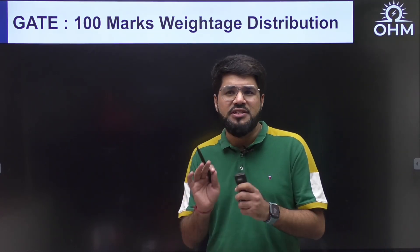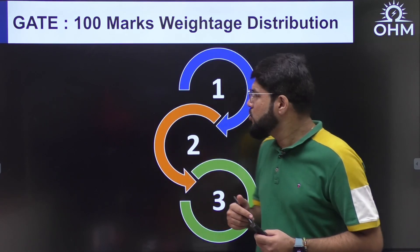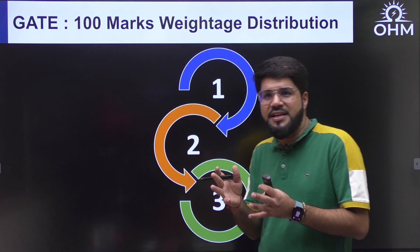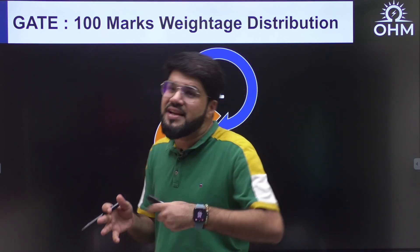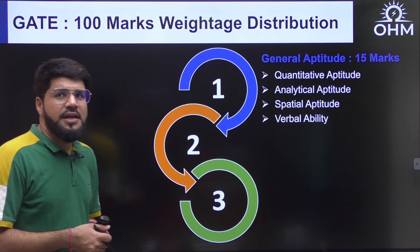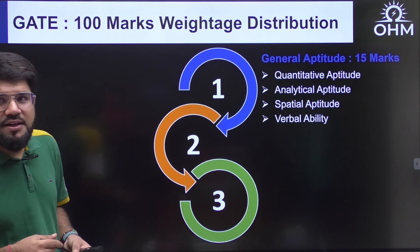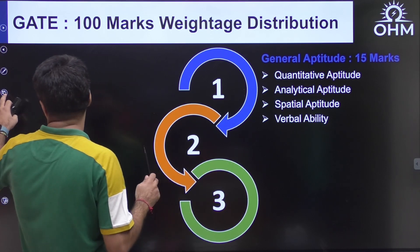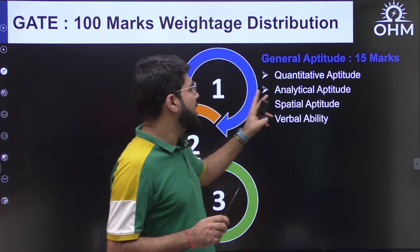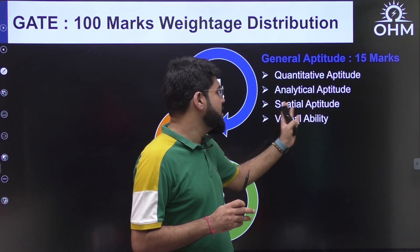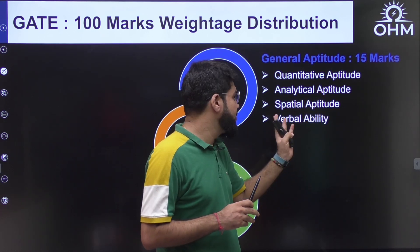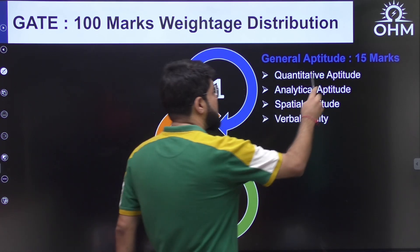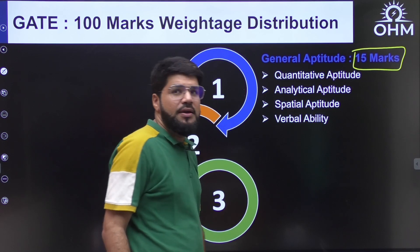Before talking about the electrical weightage, let's quickly go through the important parts of GATE's 100 marks so you identify how much weightage is for technical, and then I'll go in depth on each technical subject. General Aptitude is 15 marks — comprising four areas: quantitative aptitude, analytical aptitude, logical reasoning, spatial aptitude, and verbal ability. Since 2010, General Aptitude has a fixed weightage of 15 marks with no change.